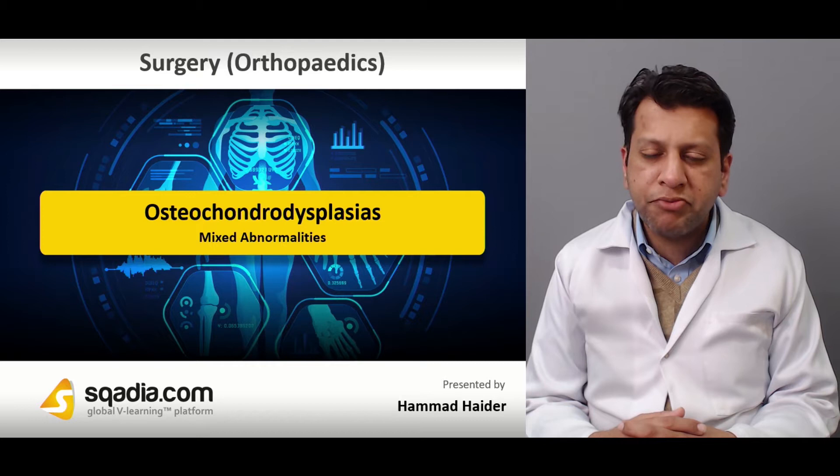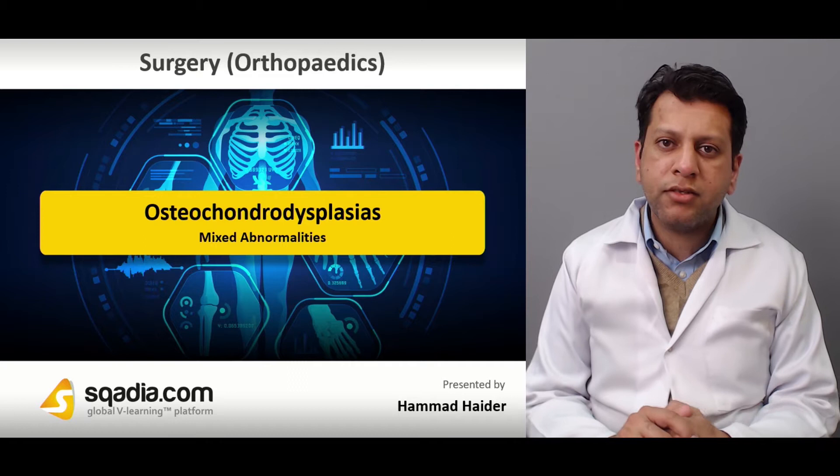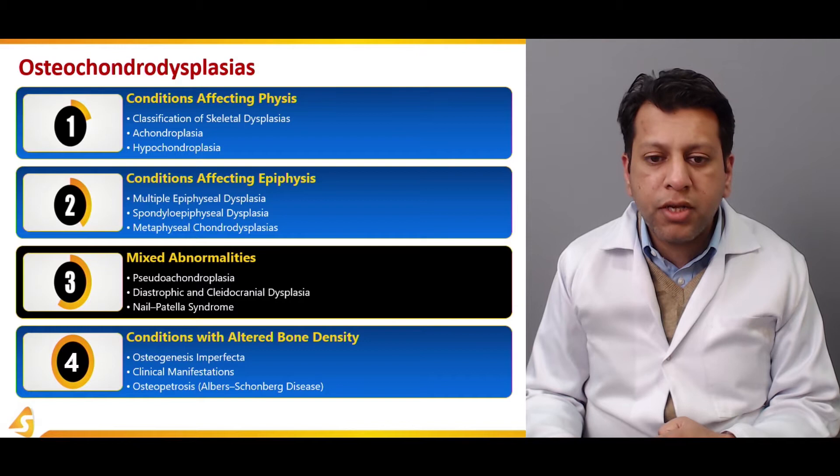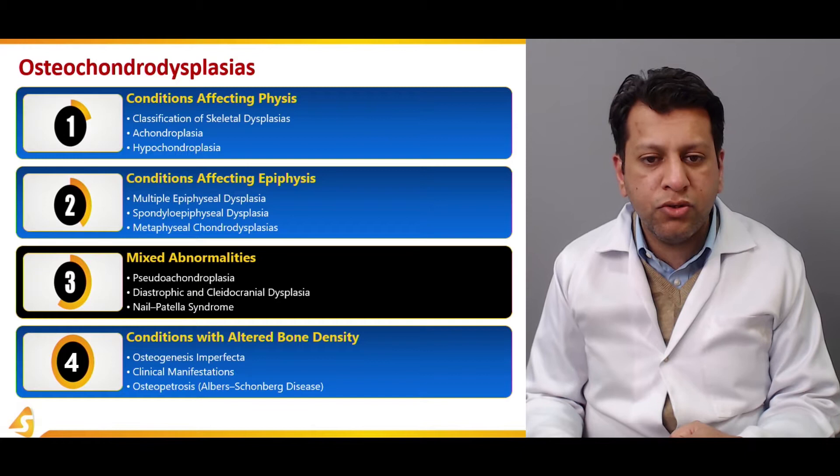We will be moving on to those diseases which are not specific for a certain region — for example, they are not specifically affecting the physis, epiphysis, or metaphysis — but are called mixed abnormalities, as they can affect any region of the bone. These include pseudoachondroplasia, diastrophic dysplasia, cleidocranial dysplasia, and nail patella syndrome.